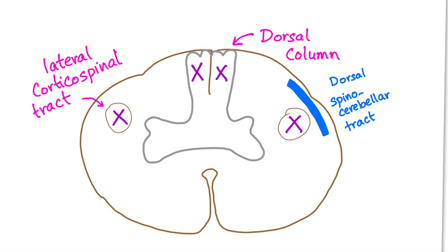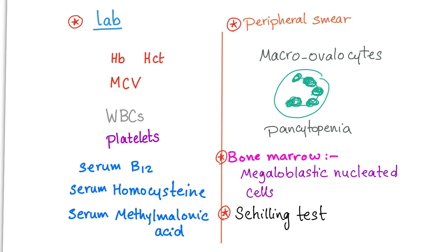Third, the dorsal spinocerebellar tract. What will happen? Ataxia. So we'll have a patient who cannot sense vibration or his joints. He is kind of wobbly and cannot walk well. And also, he will have weakness.